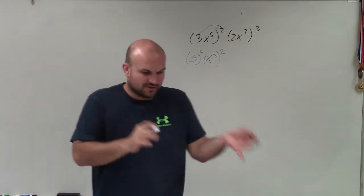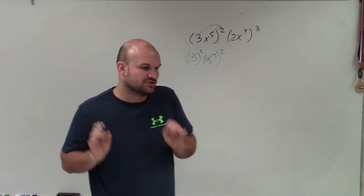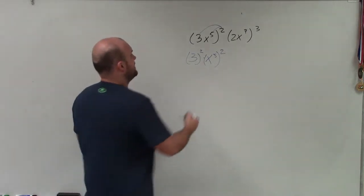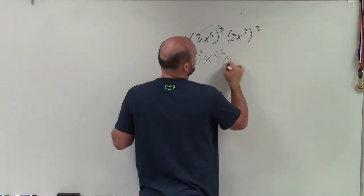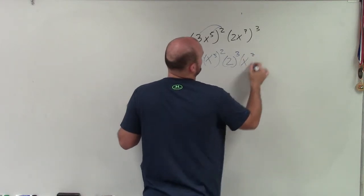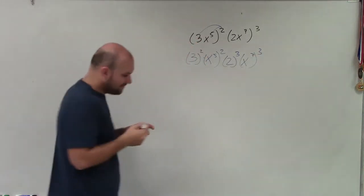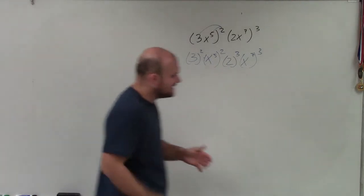So you see when I distribute, the power to product rule tells me to distribute that as a power. And then this would be 2 to the third and x to the seventh to the third. So I can see that each one of these is being raised to that power.